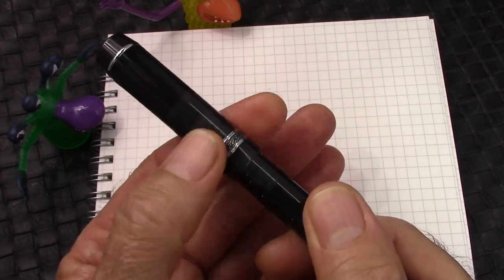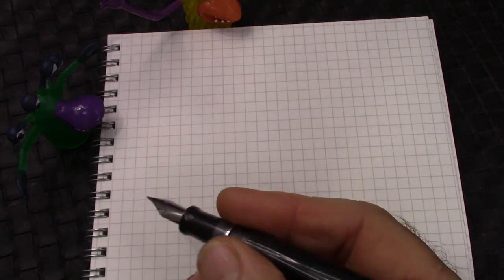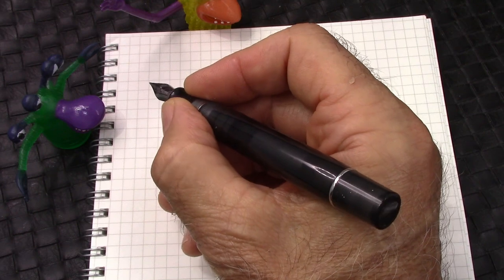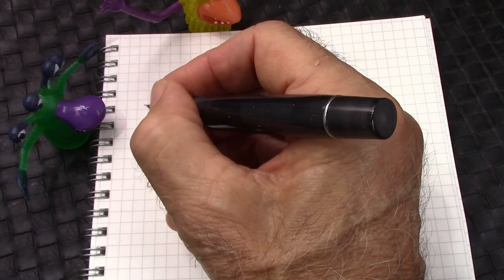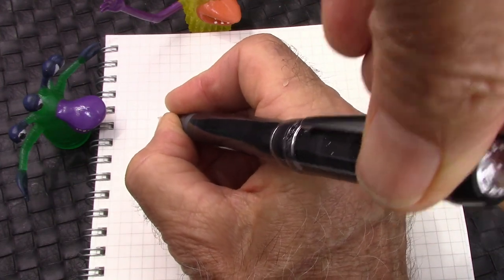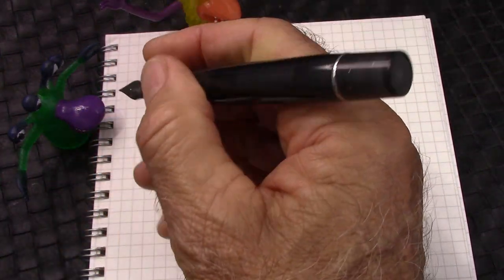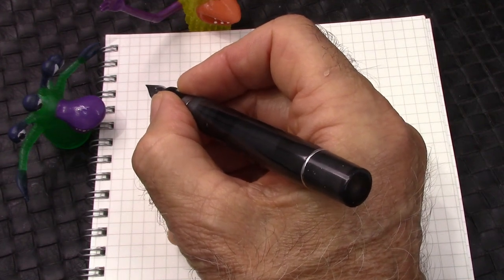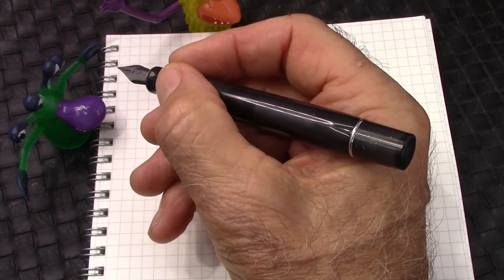The cap comes off in two and a half turns, a little bit more than I like, but I can live with it. And I'm 70, so if I can deal with two and a half turns, you youngsters can also deal with it. It fits great in the hand, feels good, that section's the right size. And if you want to put the cap someplace, you can put it at the top of the barrel. I wouldn't call it very secure, but for those of you that must post, you could post. But, not something I would do. And the weight is really nice. I like the pen.